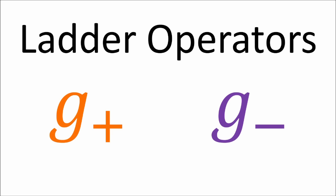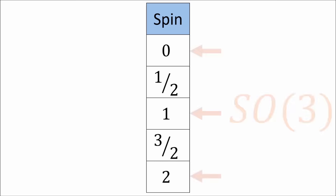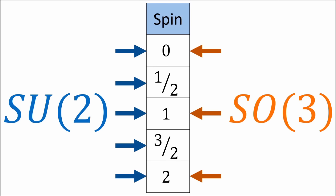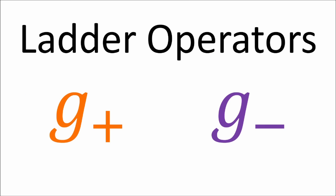This procedure will involve the ladder operators. We're going to see that the SO3 group only has representations for integer spin particles. If we want to find representations for half-integer spin particles as well, we need to look at its double-cover, SU2. Before I talk about the procedure with the ladder operators, I'm going to be more formal about some definitions in representation theory, because I've been sort of glossing over them in previous videos.